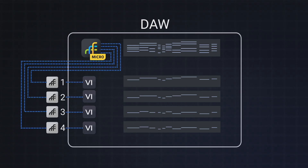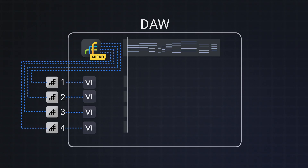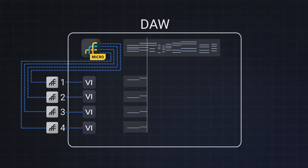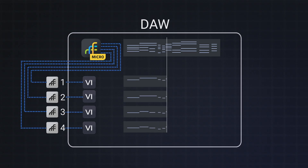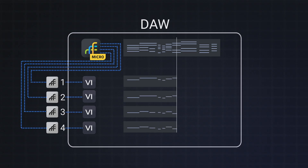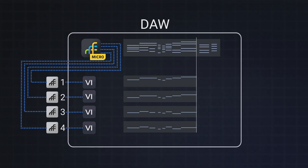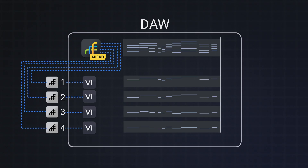Or if you don't want to play live, you can just play back existing MIDI on the Divisimate Micro track and record the processed result on the individual tracks. So essentially Divisimate Micro is looping around four processed MIDI streams back into your DAW to your instrument tracks.